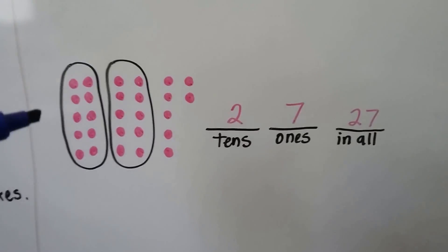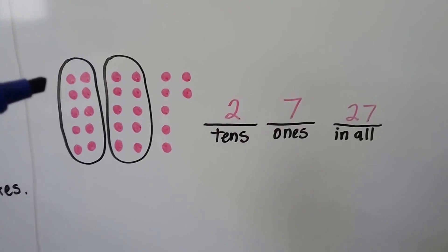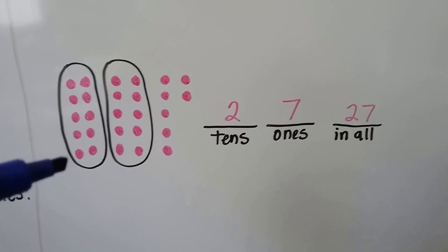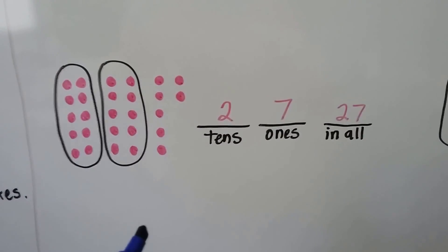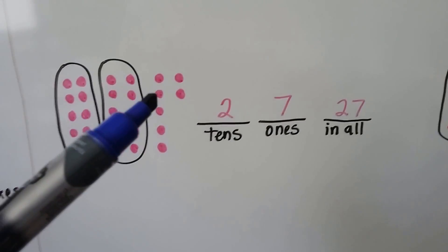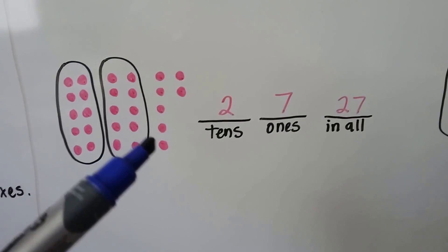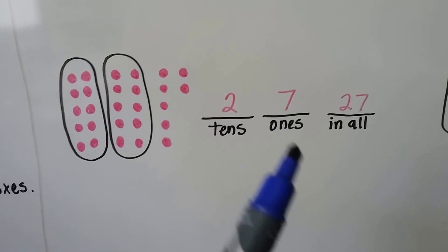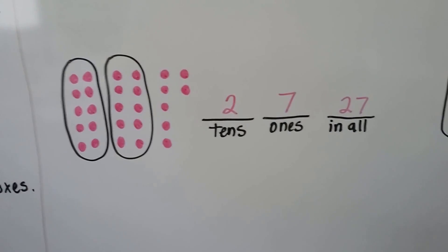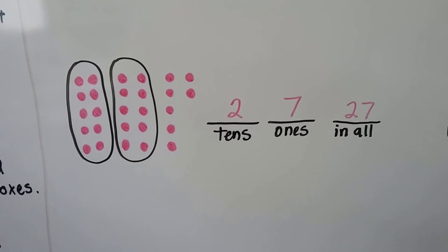Here we circle our groups of ten. We have ten here, we circle another group of ten. That's two tens. We count our ones: one, two, three, four, five, six, seven. We have seven ones. We have 27 in all. Two tens and seven ones.